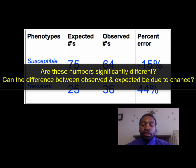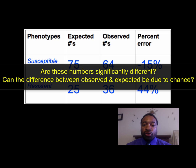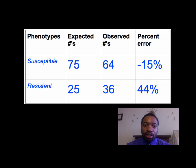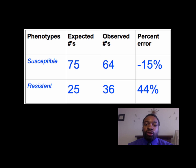But that begs the question: are these numbers significantly different than what was expected? We can compare our expected numbers of 75 and 25 to our observed numbers, 64 and 36. Can this difference be explained due to chance alone, or is something odd going on? Percent error doesn't answer that question, because we might all have different opinions about what counts as a significant percent error — 15%, 20%, 40%, 50%? Where's the cutoff? To solve that, you have to calculate something called the chi-square statistic.